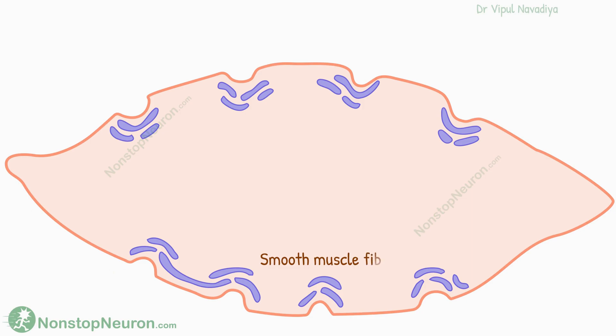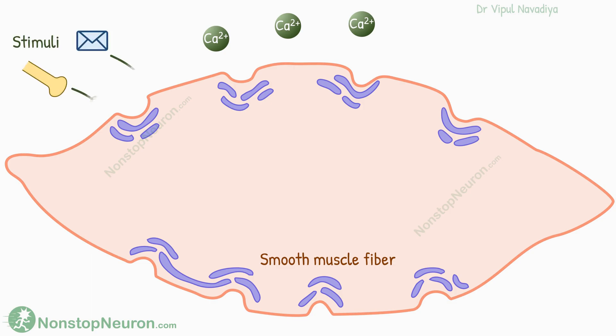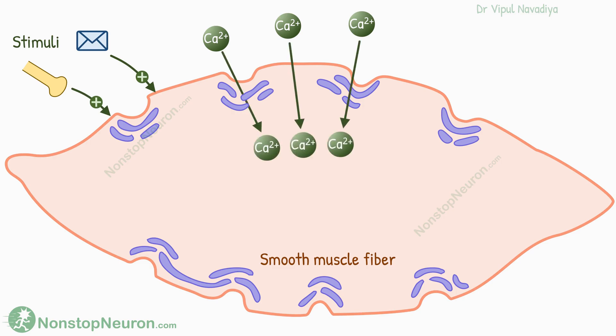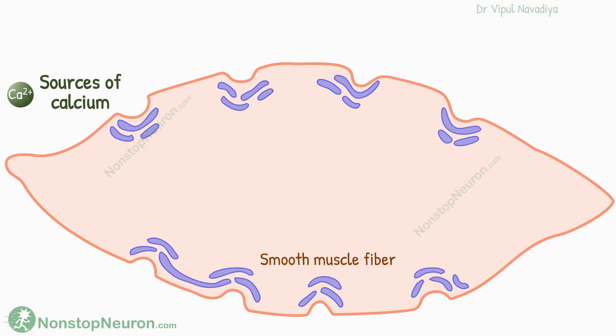This is a schematic diagram of smooth muscle fiber. Calcium ions play a crucial role in the contraction of smooth muscles, and most of the stimuli that cause smooth muscle contraction do so by increasing calcium entry into the cell. Our discussion starts with the entry of calcium into the smooth muscle fiber. There are two sources of this calcium: extracellular fluid and sarcoplasmic reticulum.